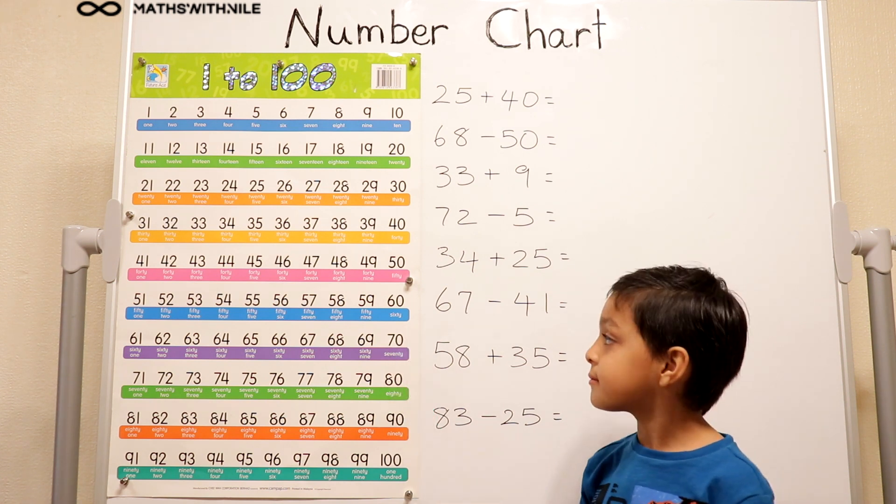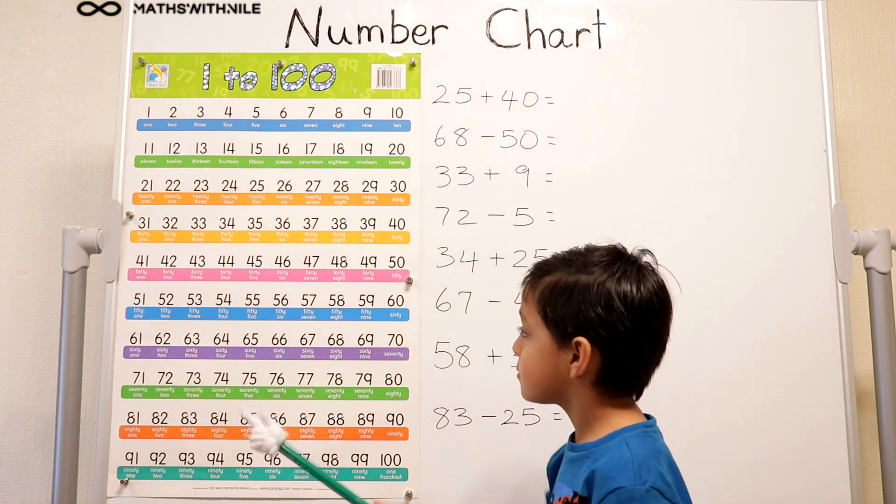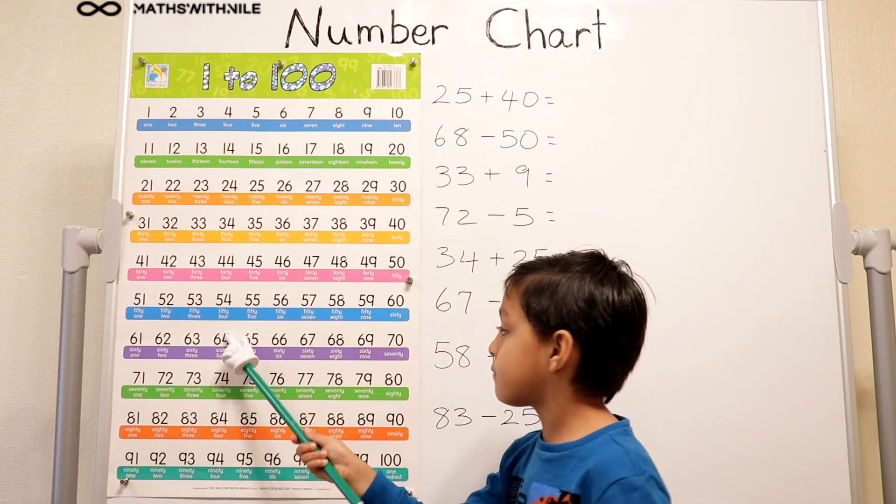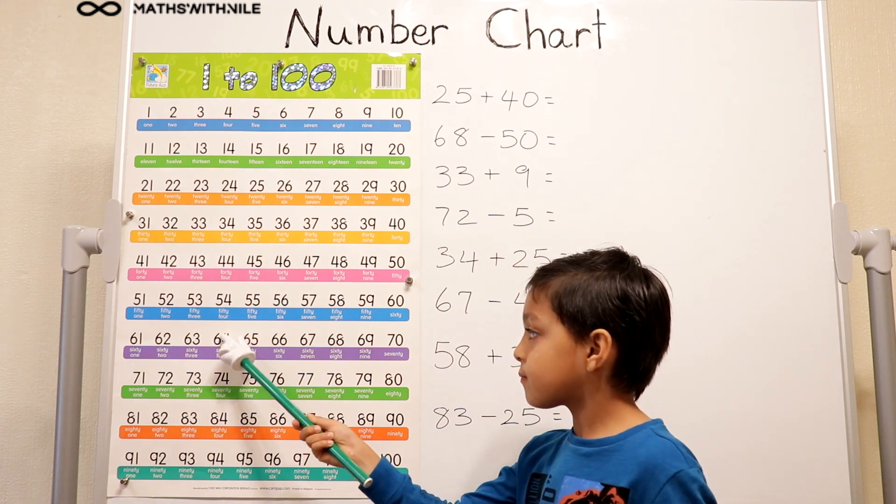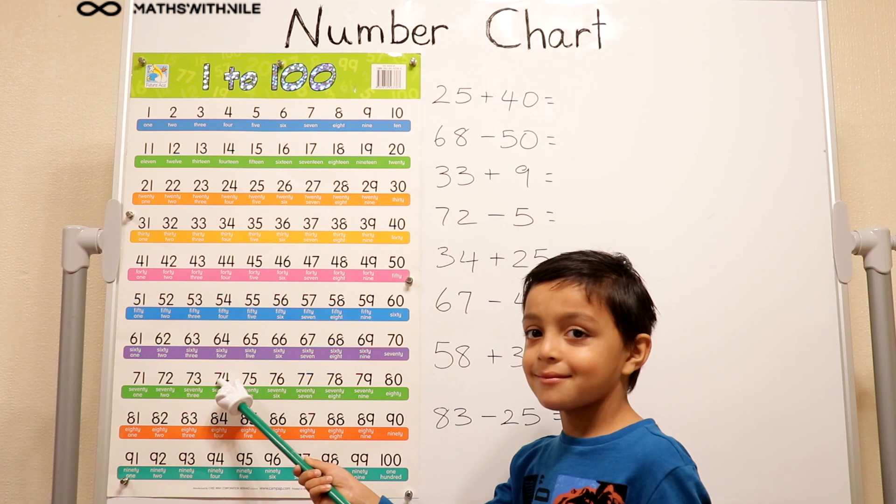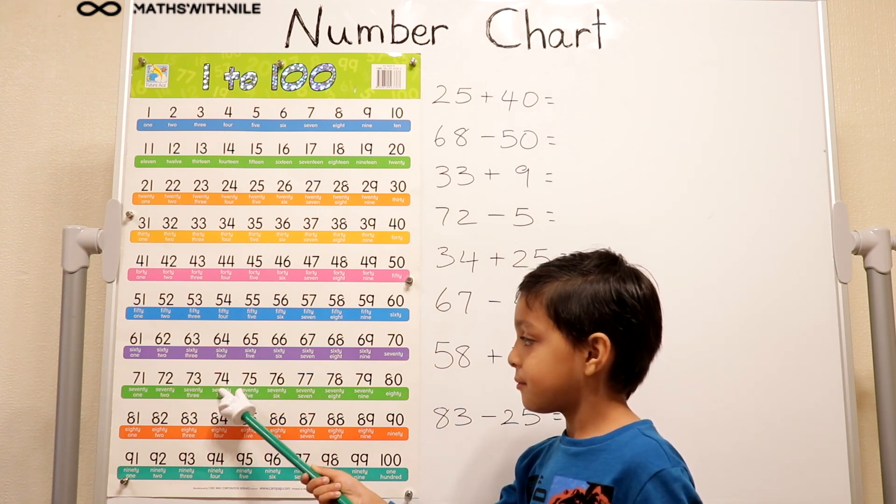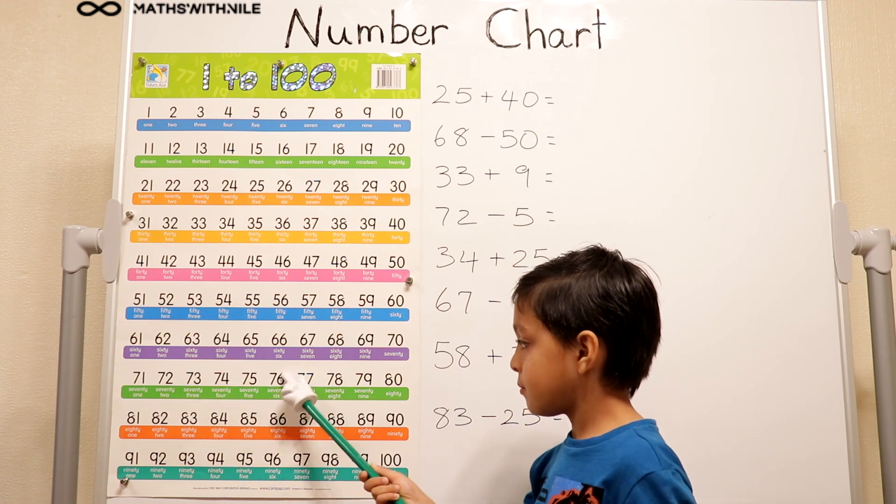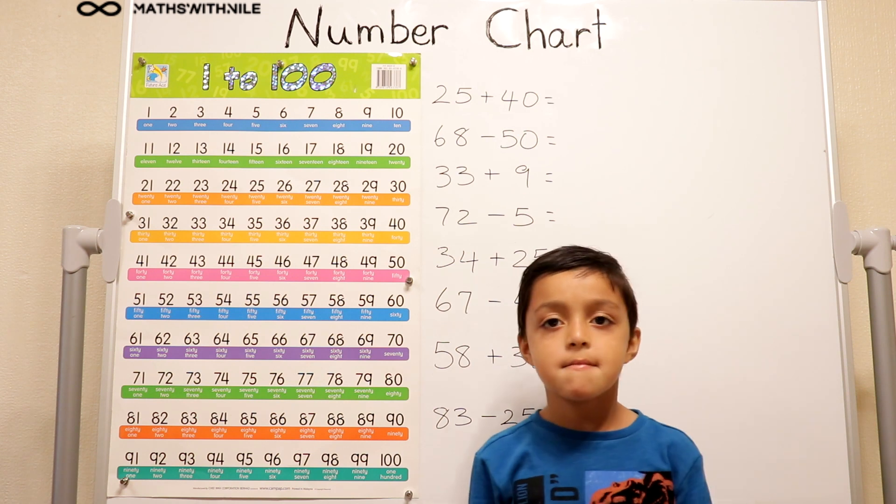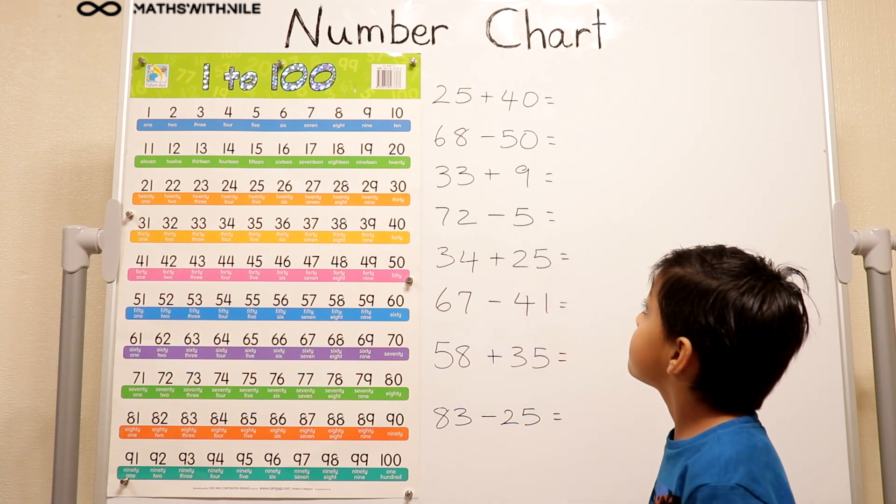So let's have a look at a random number. Let's look at 64. What's 64 plus 10? 74. Very good. And what is 76 take away 10? 66. Very good. So now that we know how it works, can you attempt those questions on the board? I'll help you if you need help.